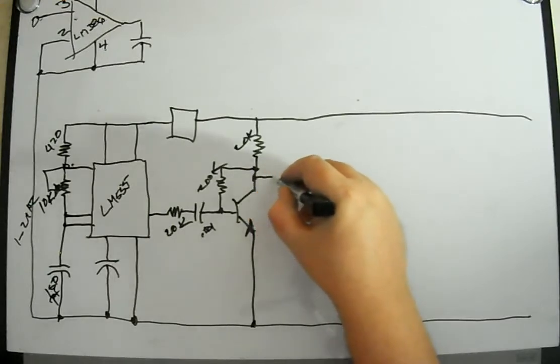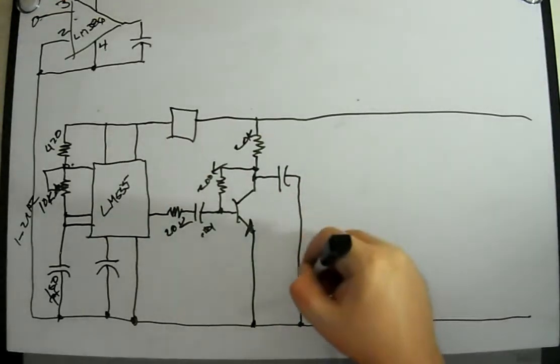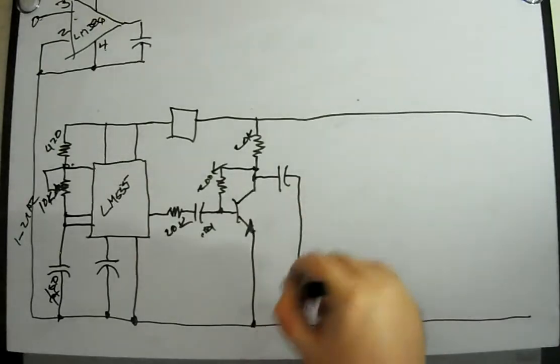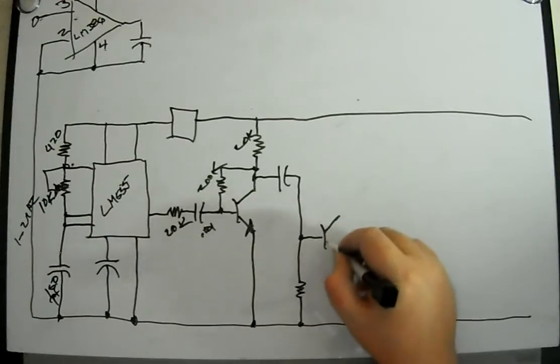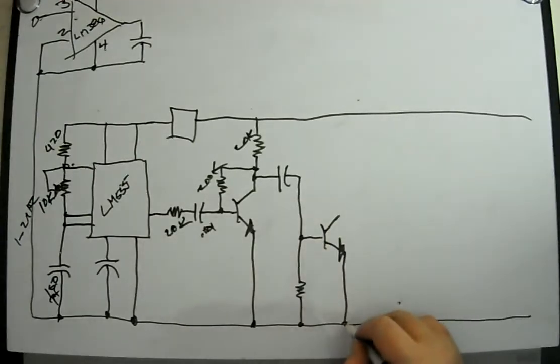Now what we've done is we've created an amplifier here for 555 signal. We'll take that signal and we'll couple it through yet another capacitor and we'll put a resistor down here. This resistor sets the input impedance and helps bias the next stage, which is yet another amplifier, another transistor.